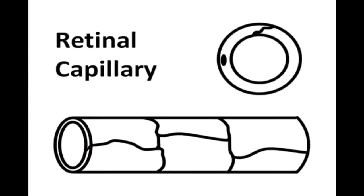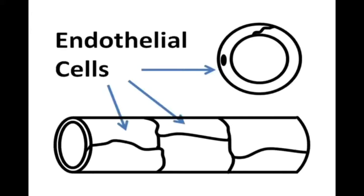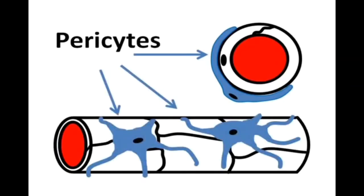This is a cross-section and side-view illustration of a retinal capillary. Retinal capillaries are formed by a one-cell thick layer of endothelial cells. In the cross-section, you can see the nucleus of an endothelial cell. These cells loop around to form a tube through which blood passes. Covering the endothelial cells is a very thin membrane. Several types of cells either surround or have appendages that contact the surface of the retinal capillaries. These include pericytes, which wrap around the capillary.